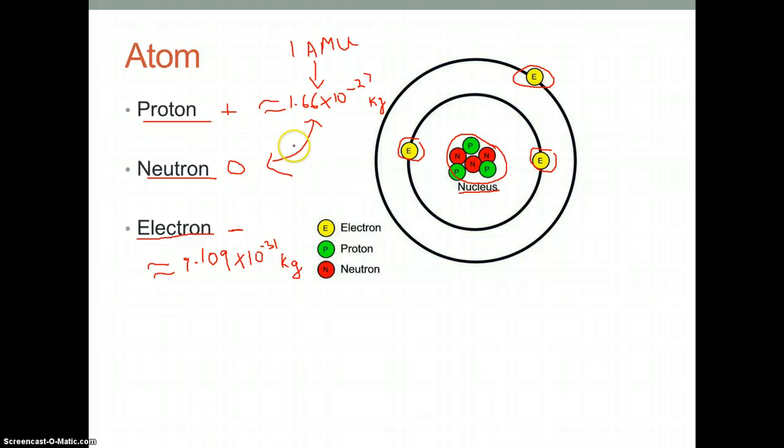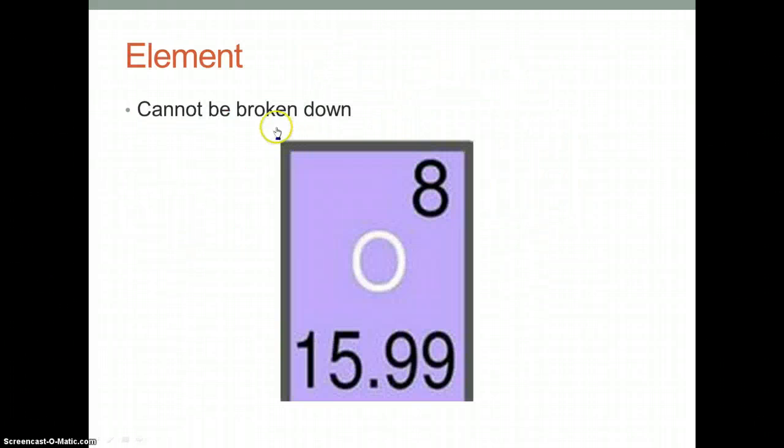Knowing what an atom is, we can move on to the next thing, which is an element. An element is a substance consisting of identical atoms and cannot be broken down. Here below, as an example, we have oxygen.